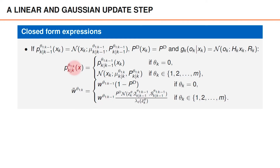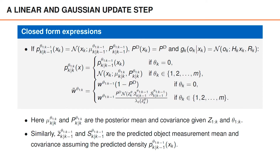The posterior density of x_k given theta_{1:k} is identical to the predicted density when theta_k states that the object is undetected at time k. If theta_k is greater than zero, the posterior density of x_k given theta_{1:k} has mean mu and covariance P. Since we are given the predicted density, it is sufficient to perform a single Kalman filter update using z_{theta_k} as measurement. The expressions for the unnormalized weights are similar to before. To compute the predicted likelihood, we need the predicted measurement z-bar and the predicted measurement covariance S.